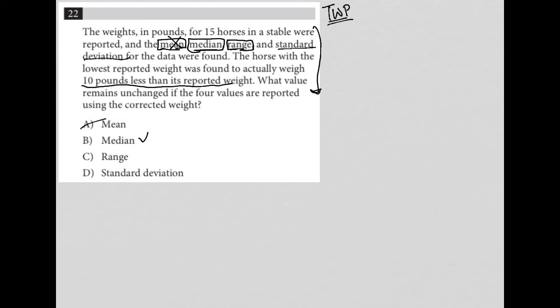The range is the difference between the highest weight and the lowest weight. So obviously, again, if we change the lowest weight, the range will change. And the standard deviation has to do with how far each data point is from the average. So, again, because the average changes, the standard deviation will also more than likely change.